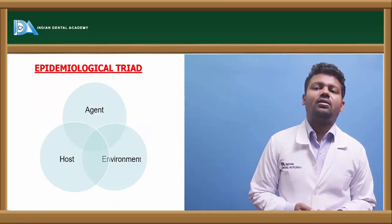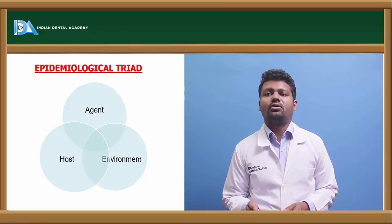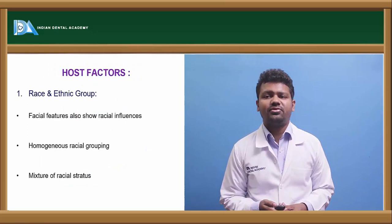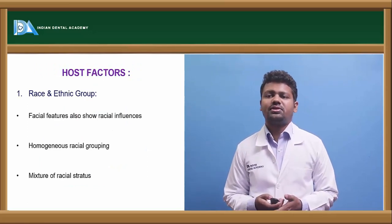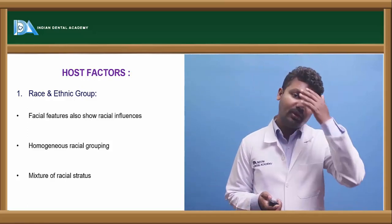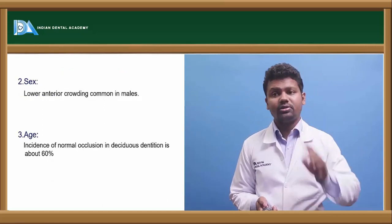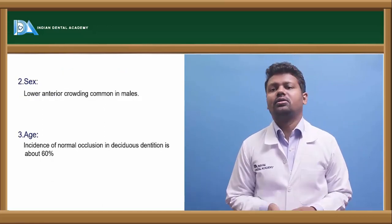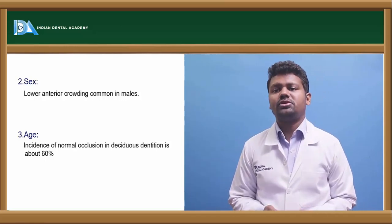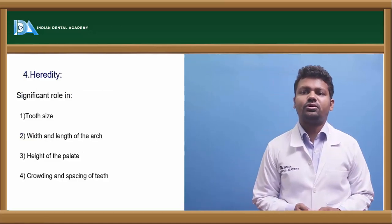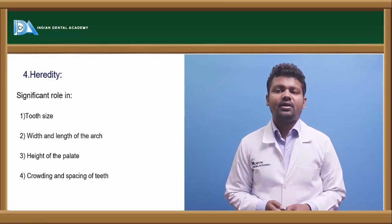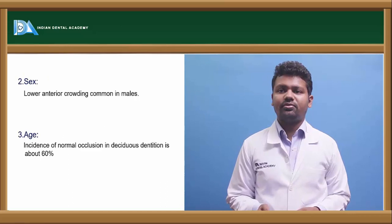This is the epidemiological triad. Agent, host, and environment are the factors for causing malocclusion. Host factors are race and ethnic — racial features vary with different races. Homogeneous racial grouping and mixed racial status will influence jaw size and be a host factor for malocclusion. Then there is gender or sex — lower anterior crowding is common in males. Age incidence of normal occlusion in the deciduous dentition is about 60%. The fourth host factor is heredity, which significantly influences tooth sizes, width and length of the arch, height of palate, and crowding and spacing of teeth.